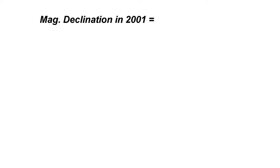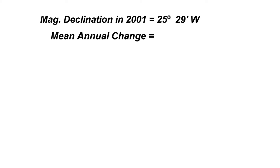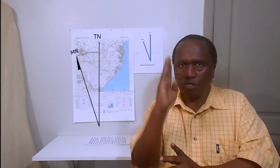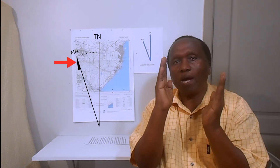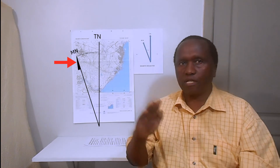Number one: write down that in 2001 the magnetic declination was 25 degrees 29 minutes west. Then look at the mean annual change — on the map it is saying 9 minutes west. This means when you look at the magnetic declination, between the two arms there is the true north arm, which does not move at all.